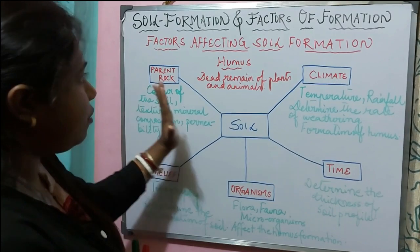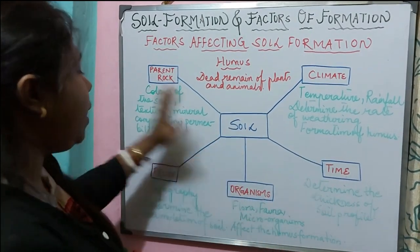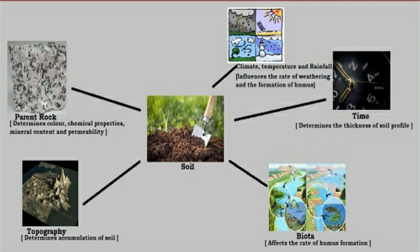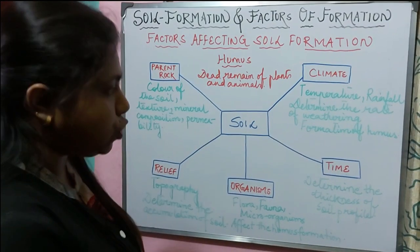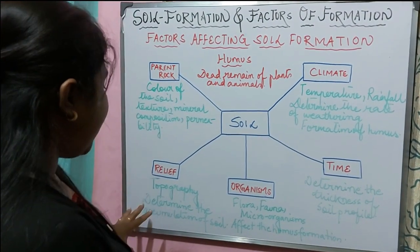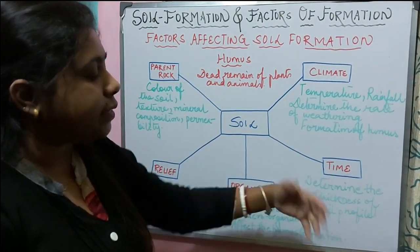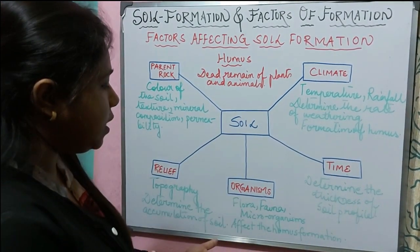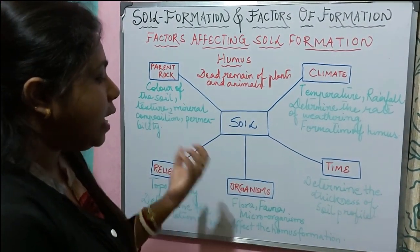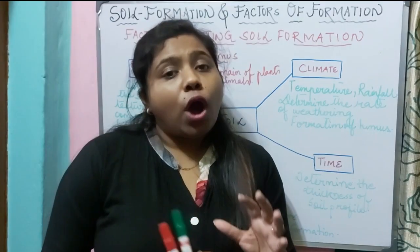So the factors that affect the formation of soil are: number one, parent rock, which determines color, texture, mineral composition, and permeability; climate, which determines the rate of weathering and formation of humus; relief, which determines the accumulation of soil; time, which determines the thickness of the soil profile; and organisms, which affect the humus formation.